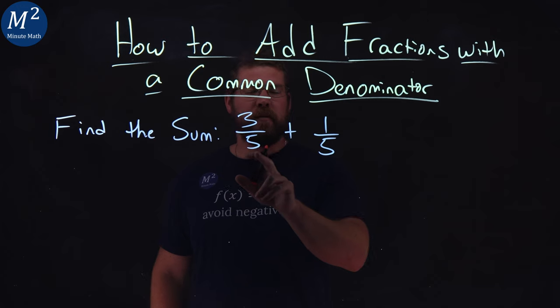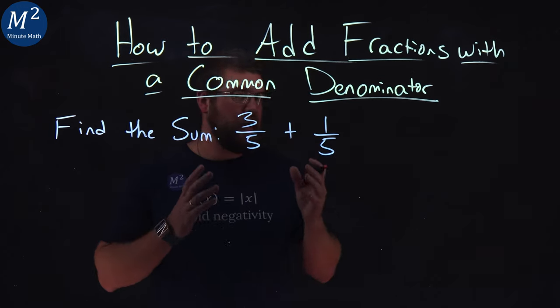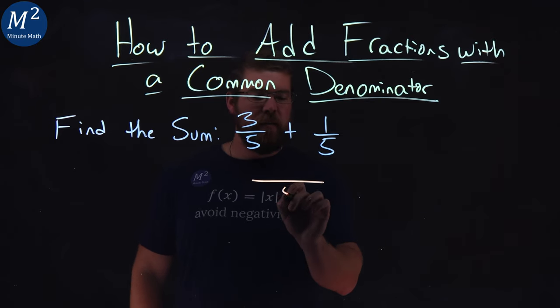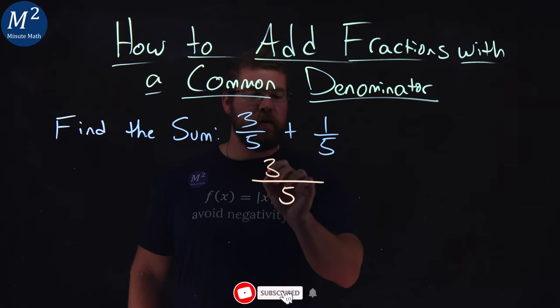There's a five in both denominators here. When that happens, once we have a common denominator, we can add the fractions by keeping that same denominator of five and adding the numerators.